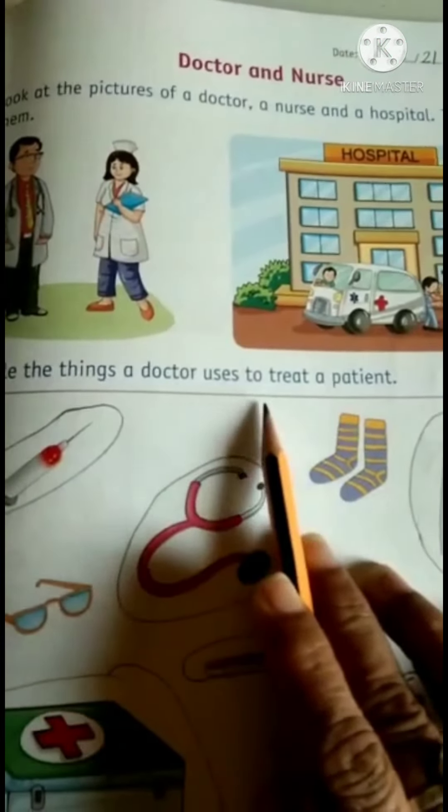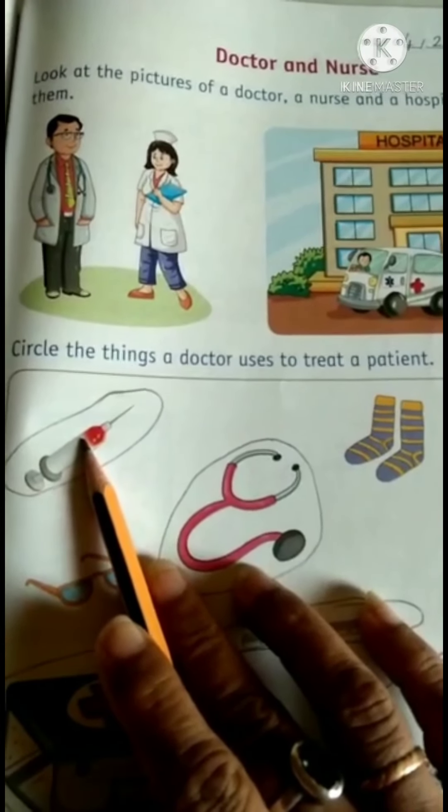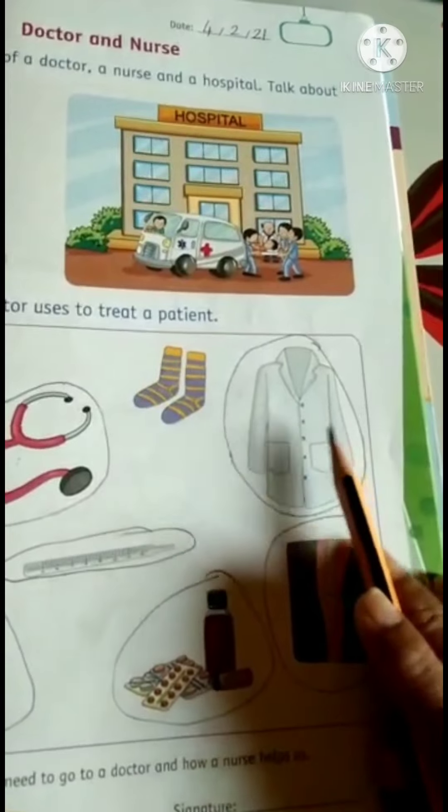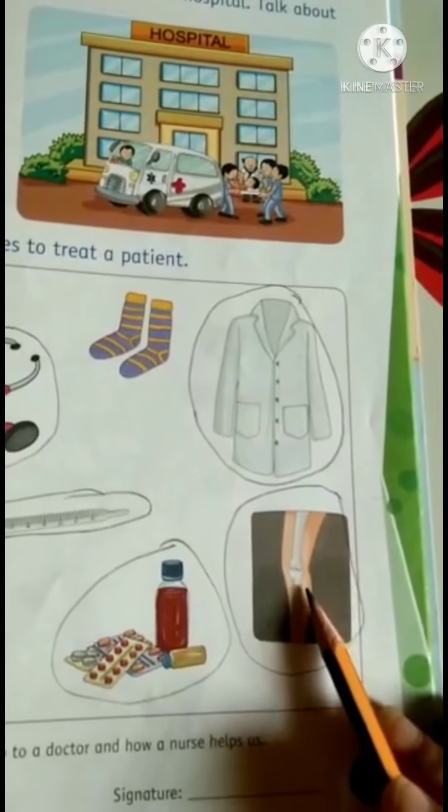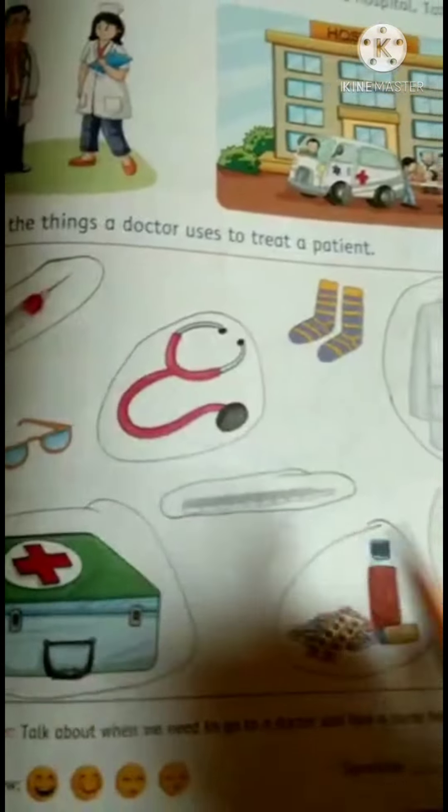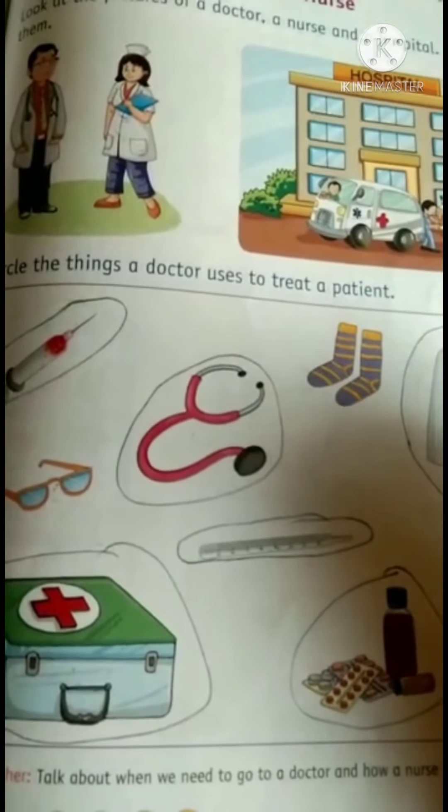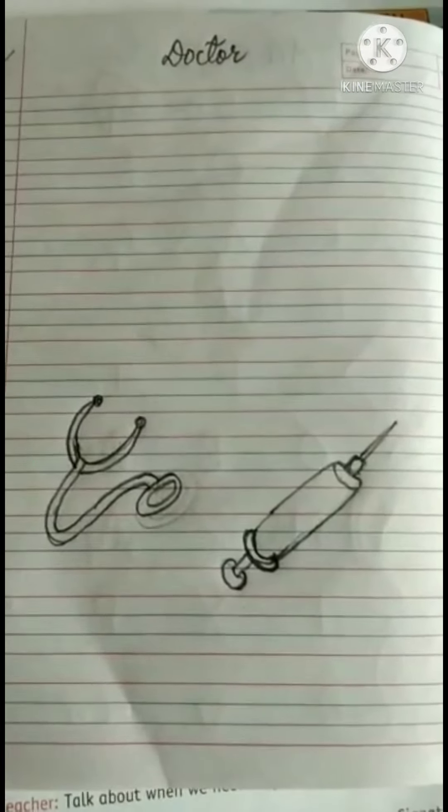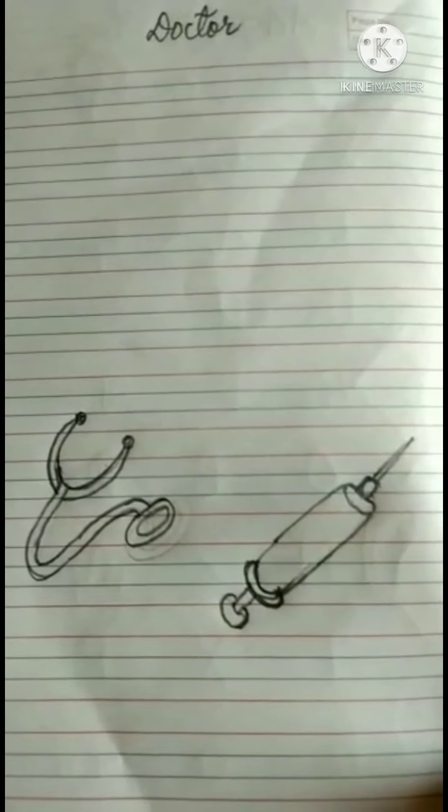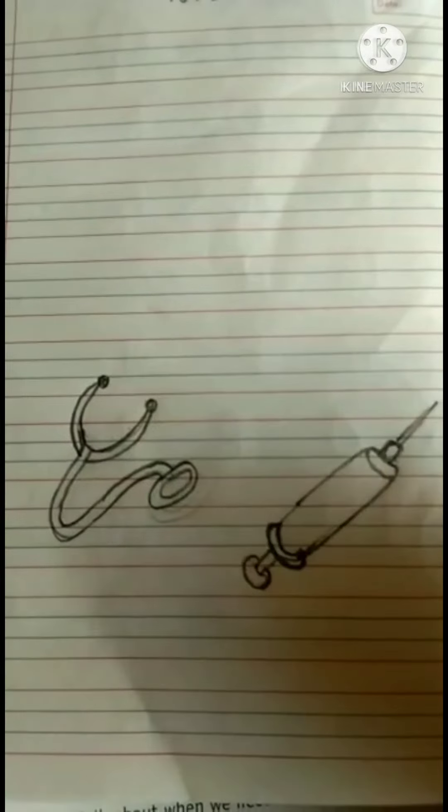Circle the things a doctor uses to treat a patient. It's an injection, so a doctor needs an injection to treat a patient. Stethoscope also needed. This one is a coat of doctor. It's an x-ray. Medicine. Medical kit. So circle all these things. Thermometer. Don't circle sunglasses and socks. Now we will write in our English notebook. I want you to stick or draw a picture of a doctor and then draw few things a doctor uses to treat a patient. So I have drawn stethoscope and injection. If you want you can draw many more.